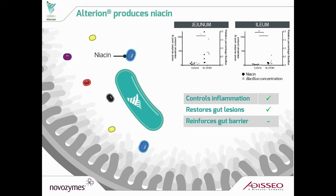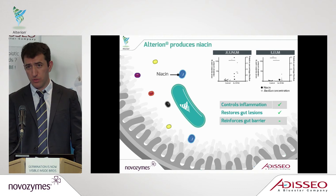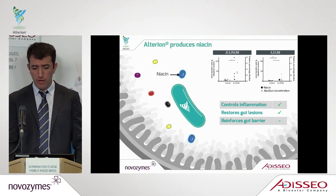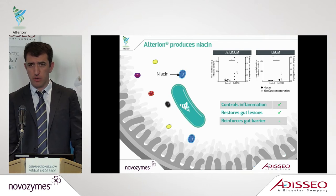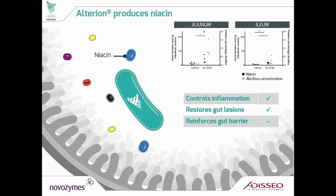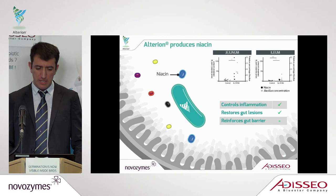Starting with the first one — niacin. Niacin was produced both in vitro and in vivo in different sections of the gut, in the jejunum and ileum. You can see on the graph in the top corner of the slide that the concentration of this metabolite is really linked with the growth of Bacillus in the gut, meaning that the presence of Alterion will impact the concentration of niacin. But knowing the metabolite is one thing — we also need to understand its real effect and function.